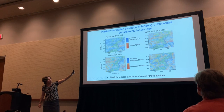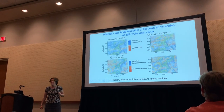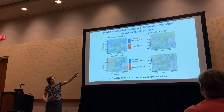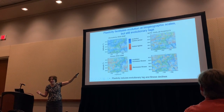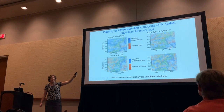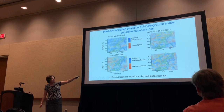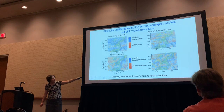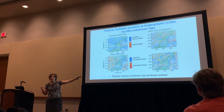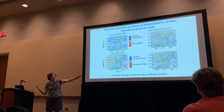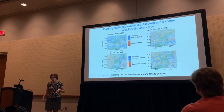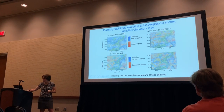When we allow the evolution of plasticity, we see more red areas where evolution has made wings lighter, confirming that plasticity facilitates evolution at this broad biogeographic scale. Looking at fitness on the bottom, we see more blue areas where evolution is increasing fitness. But we still have a lot of evolutionary lags decreasing fitness — plasticity is serving to reduce these evolutionary lags.